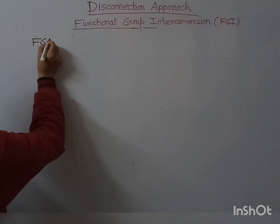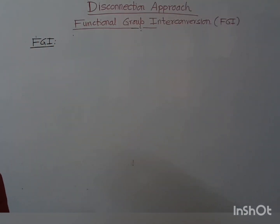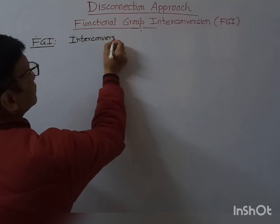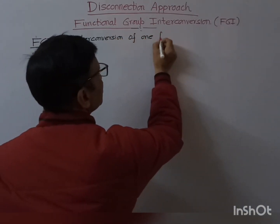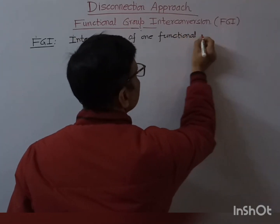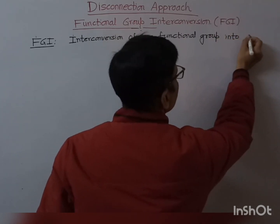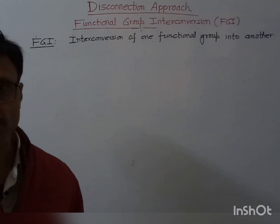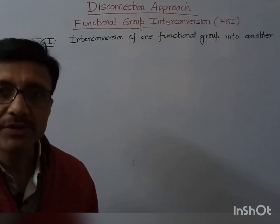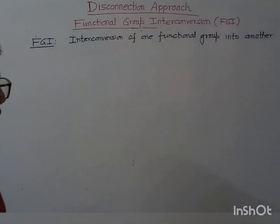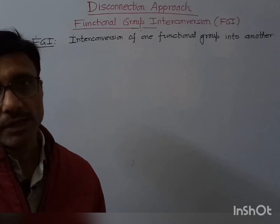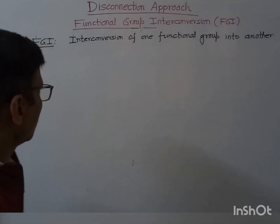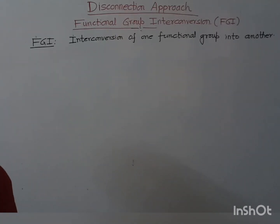How can we define this FGI? FGI is the interconversion of one functional group to another. Sometimes, when you disconnect any target molecule, you will not get good starting material — we can say we don't get workable starting material. In that case, we need FGI. If you do the FGI followed by disconnection, then you may get good starting material. So this FGI is needed when the disconnection is unfavorable.